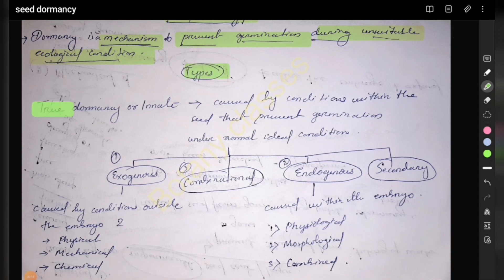The first type is endodormancy or innate type, caused by conditions within the seed that prevent germination under normal ideal conditions. There are four types: exogenous, combinational, endogenous, and secondary.